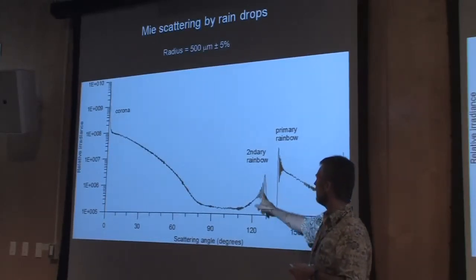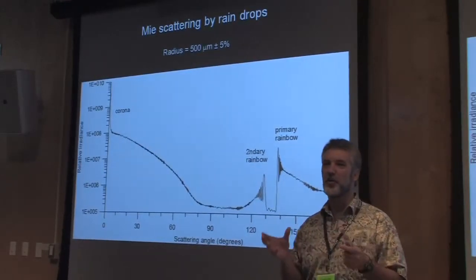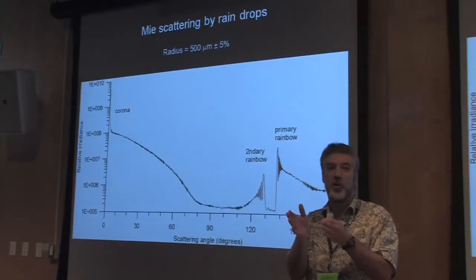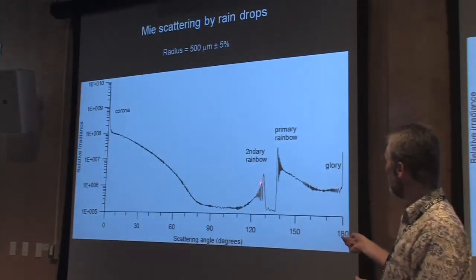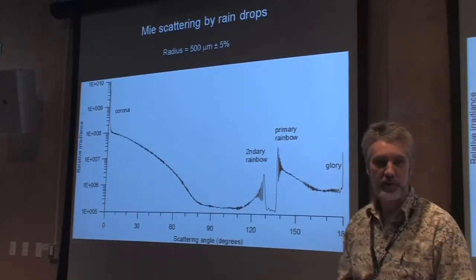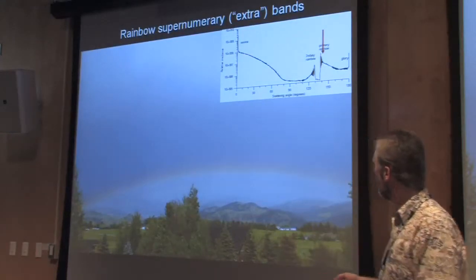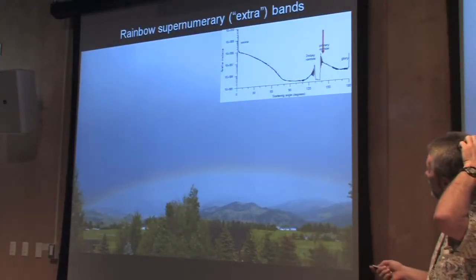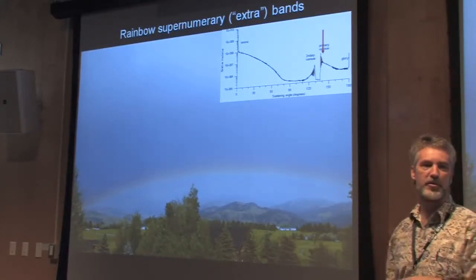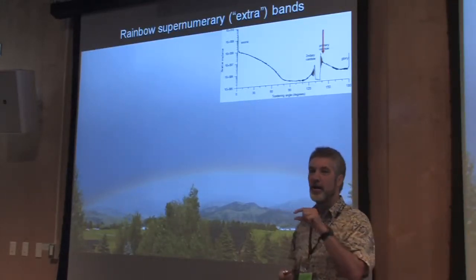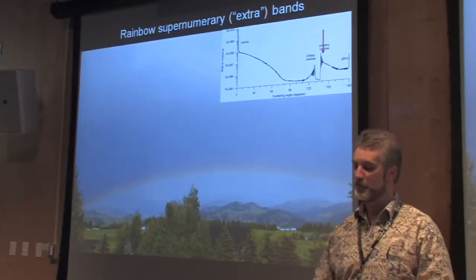The secondary rainbow appears at a different scattering angle, and in between is what we call Alexander's dark band — a dark band from the angular range from which we took light to create the rainbow. There are also oscillations which are interference effects that geometric optics doesn't predict. You can see the rainbow here with some extra stripes — those extra bands are interference bands predicted by the scattering calculation.